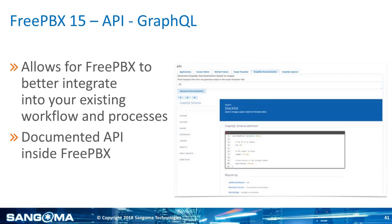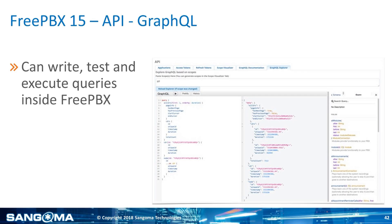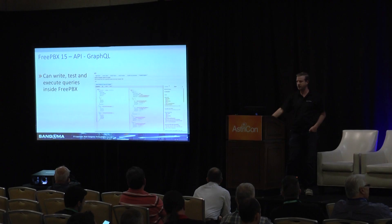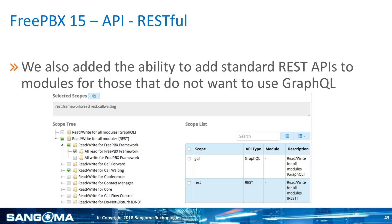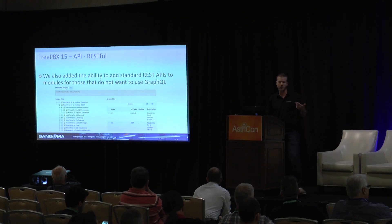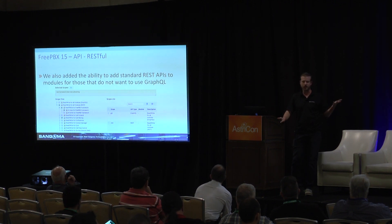GraphQL allows you to better integrate FreePBX into your workflow. It's also self-documenting. You can write, test, and execute queries inside of FreePBX. On top of that, we also added a basic RESTful API. If you don't want to use GraphQL, you can use the REST API. We don't have a lot of functionality in it yet, but developers and the community can come along and add that — it's the same logic, scope-based and OAuth2-based, the same way GraphQL works. More information is available on our wiki.